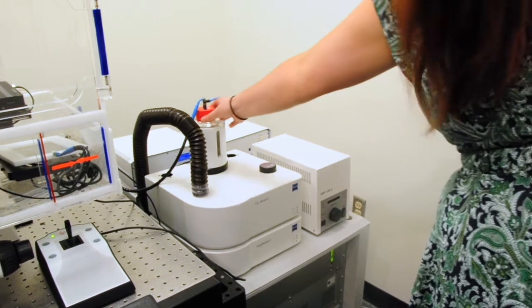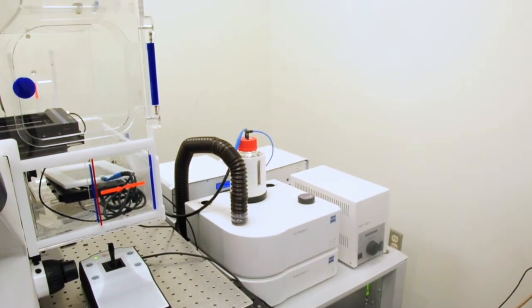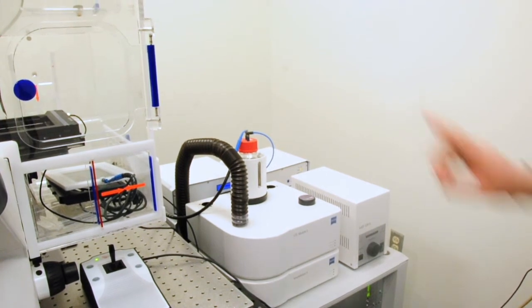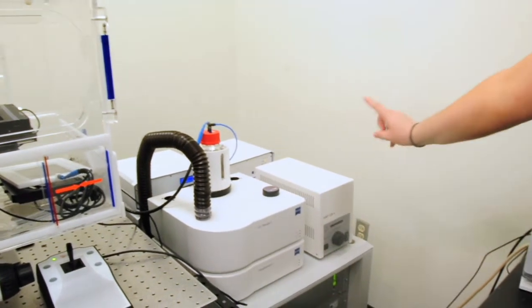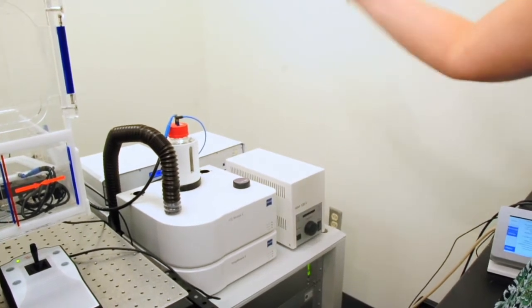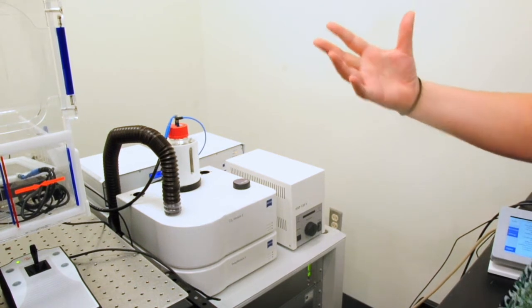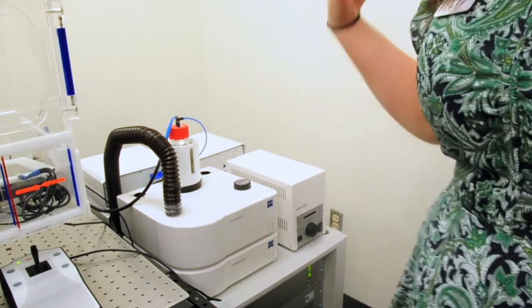This is bubbled through water so that it stays humid and we don't have evaporation when we're doing live cell imaging. And to the right, we have our HXP120, a metal halide light source so that we can look at the cells through the eyepieces because we can't look at our samples with lasers.